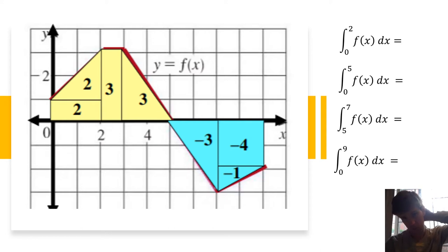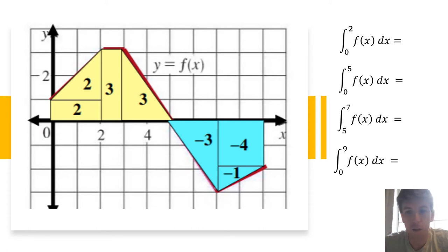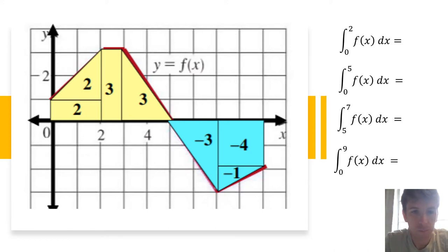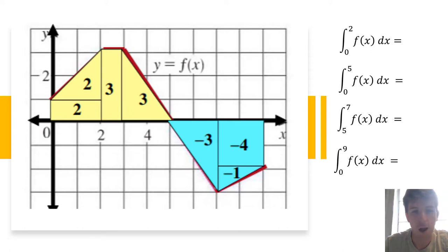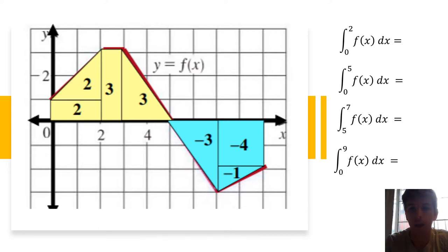Let's do this example, really hammering home the point that definite integrals refer to areas. We divided up this strange-looking function into little subsections where we get areas using geometry formulas — rectangles using length times width, triangles using one-half base times height. We figured out all these areas and now we'll get the corresponding definite integrals.